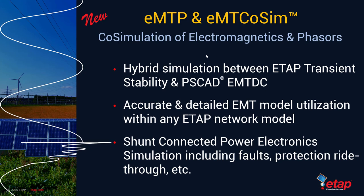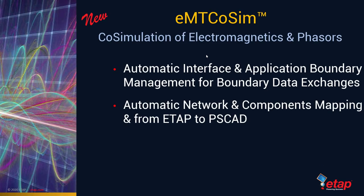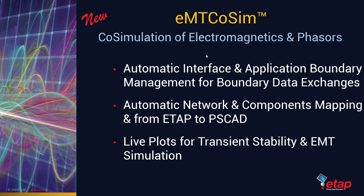This includes shunt-connected power electronic devices such as STATCOMs, SVCs, wind turbines, PV arrays, arc furnaces, and so on. You can include these types of devices with various actions such as faults, protection write-through, etc., for various grid code compliance and switching transient studies. EMT co-sim allows defining an automatic interface and application boundary management for boundary data exchange so that information between the electromagnetic and phasor domains can be exchanged without user intervention. Automatic network and component mapping is available to transfer either a portion or the complete network from ETAP to PSCAD software.